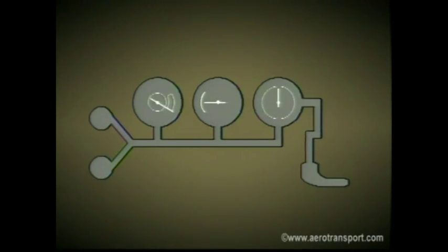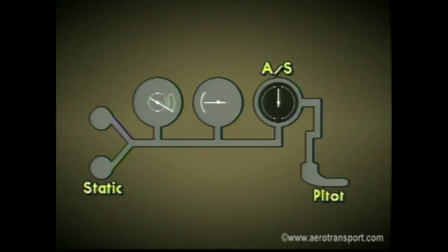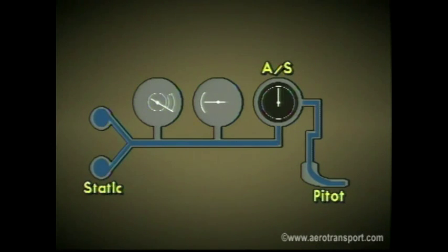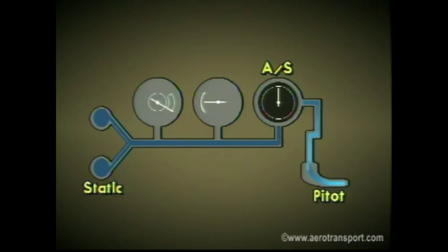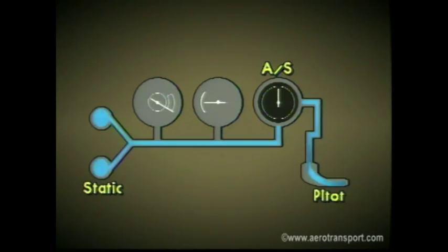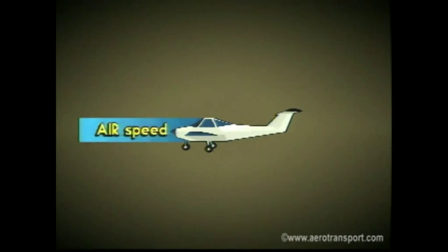The airspeed indicator is connected to both the pitot tube and the static pressure tube. This instrument measures the difference in air pressure between the two tubes. While on the ground and not moving, the pressure in the two lines would be the same and thus register zero on the airspeed gauge. But while in motion, the pressure builds in the pitot tube. This pressure differential is read on the gauge as the indicated airspeed — the speed the aircraft is traveling through the air, not over the ground.